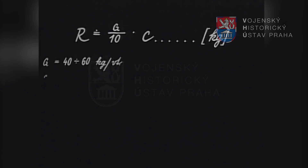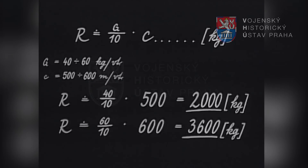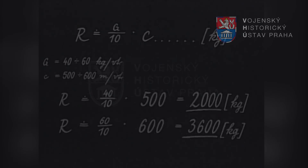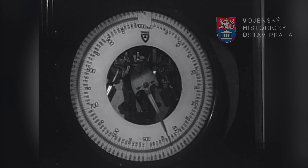Turbokompresorovými motory protéká 40 až 60 kilogramů vzduchu za vteřinu. Přitom plyny ve výtokové trysce mají rychlost 500 až 600 metrů za vteřinu. Motor pracující na místě může tedy vyvinout tah 2000 až 3600 kilogramů. Tah motoru zjišťujeme na zkušebně — dopředná síla je přenášena převodem na váhy, jejichž výchylka nám určuje velikost tahu motoru na místě.